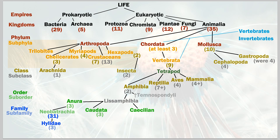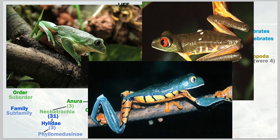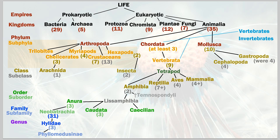Within hylidae there are three subfamilies. We'll explore one: phyllomedusinae — tree frogs that are starting to get an even more uniform look to them, all looking more similar to one another. A very interesting group of frogs.